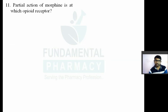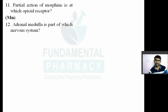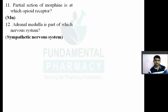Question number eleven: morphine's partial action is at which opioid receptor? There are different opioid receptors: mu receptor, kappa receptor, and delta receptor. Morphine is actually a full agonist at mu, kappa, and delta receptors. Question number twelve: adrenal medulla is a part of which nervous system? The adrenal medulla produces adrenaline, so it is a part of the sympathetic nervous system.